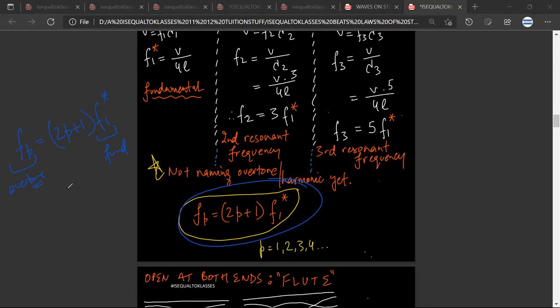So now the question is: the overtones produced are 640 hertz, 896 hertz, and 1152 hertz. And you are asking what will be the fundamental frequency.